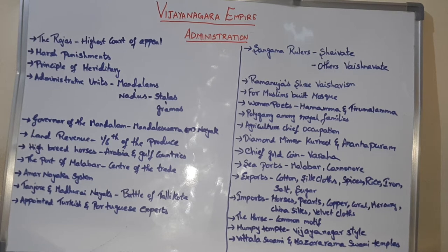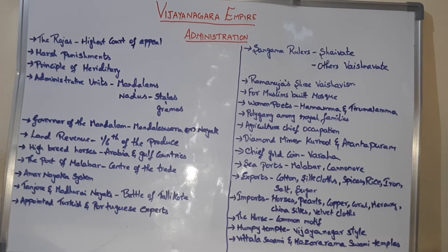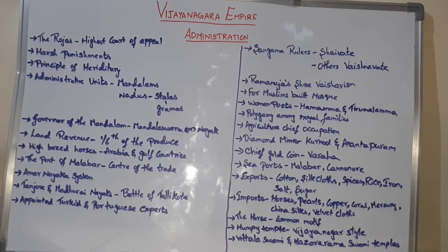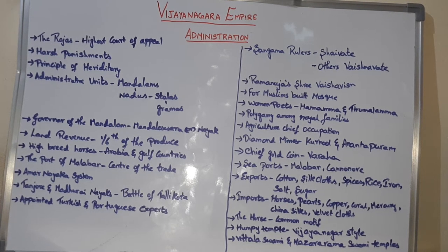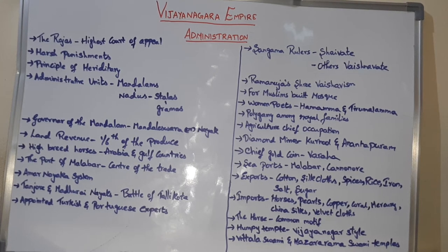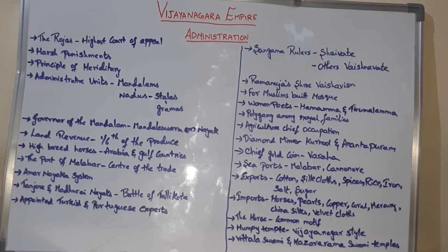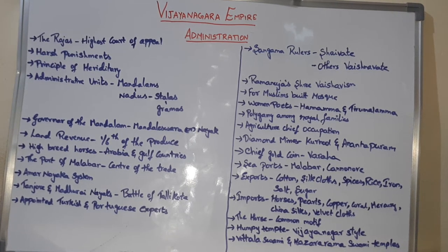Because of too many wars with neighboring kingdoms, the Vijayanagara emperors concentrated on military power. They maintained four types of military: Cavalry, Infantry, Artillery, and Elephants. Hybrid horses were procured from foreign traders across the Arabian Sea, from Arabia and other Gulf countries. The ports of Malabar were the centre of horse trading and trade in other luxury commodities.